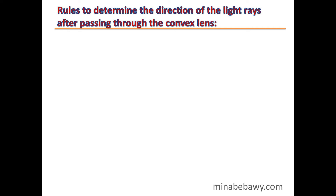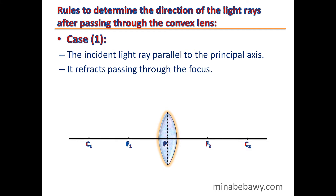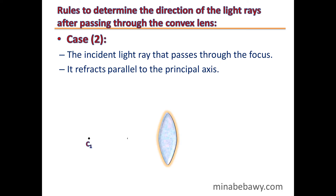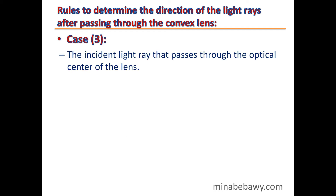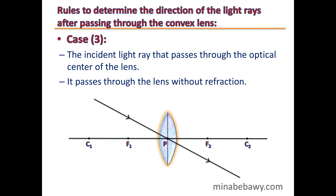Rules to determine the direction of light rays after passing through a convex lens: Case 1 — the incident light ray parallel to the principal axis refracts passing through the focus. Case 2 — the incident light ray that passes through the focus refracts parallel to the principal axis. Case 3 — the incident light ray that passes through the optical center of the lens passes through without refraction.